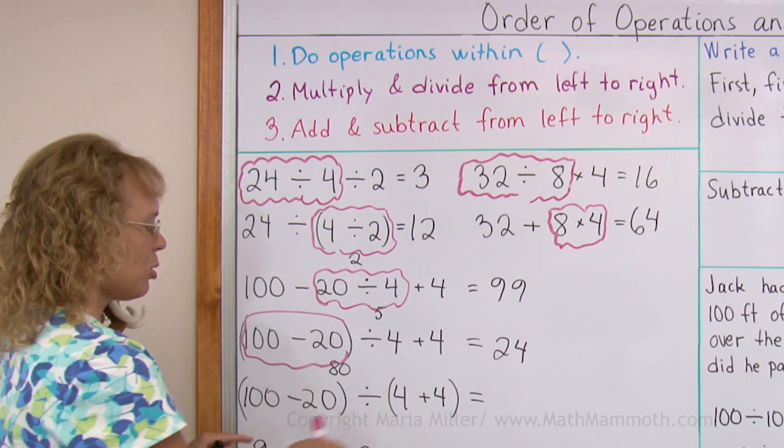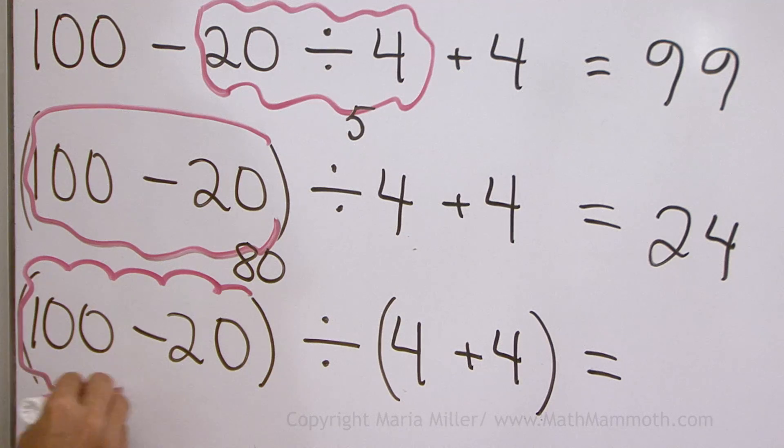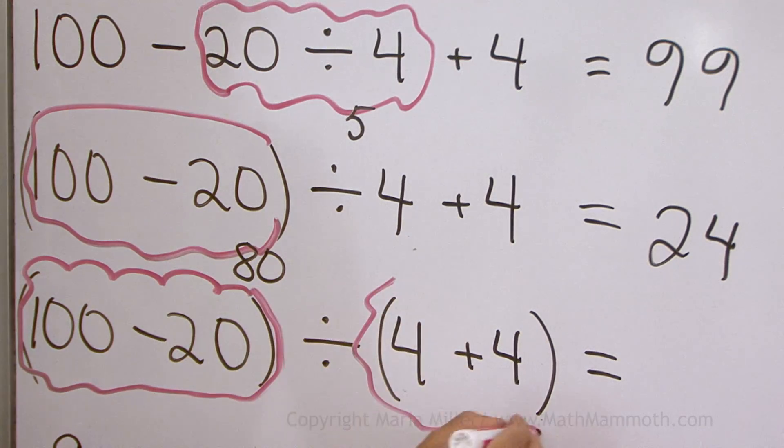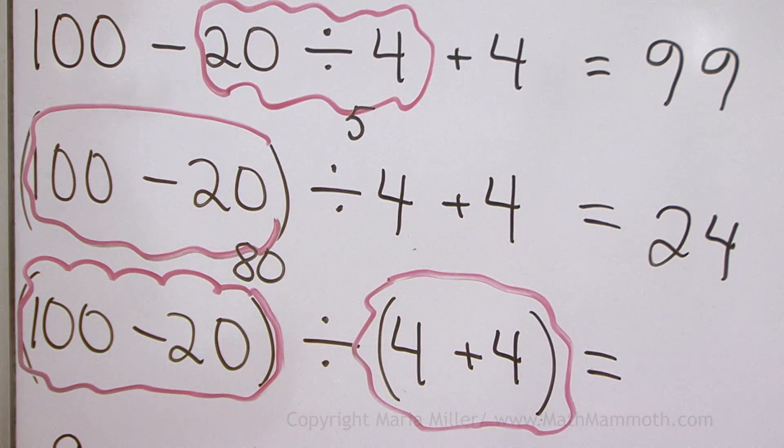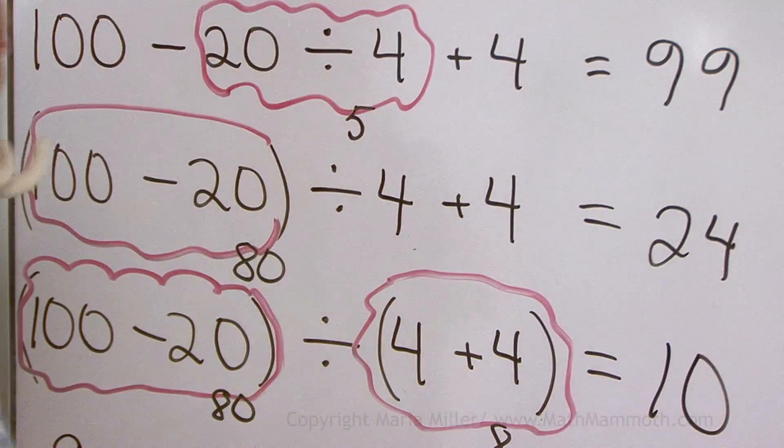Lastly, there's two parentheses. Do both of them first, before anything else. Here we get 80 again. Here we get 8. And then 80 divided by 8. That was easy.